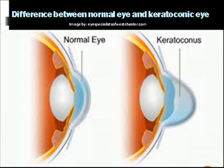The literal meaning of keratoconus is 'conical cornea' or 'cornea cone.' When someone suffers from keratoconus, the shape of the cornea becomes conical — that's why it is called keratoconus. To understand this corneal disease, you first need to understand what the cornea is and how it is responsible for keratoconus.